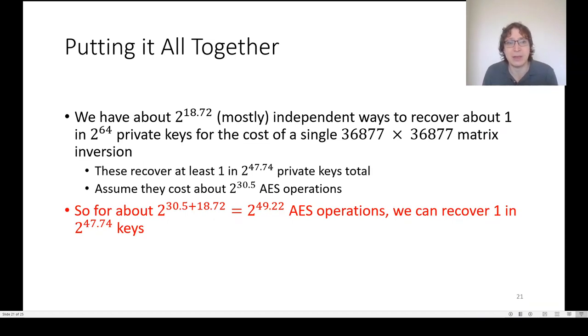When we put this all together, we have an attack that consists of 2 to the 18.72 iterations. Each iteration costs something like 2 to the 30 and a half AES operations, and we recover at least one in 2 to the 47.74 private keys. We find when we multiply those out, the net cost of the attack is 2 to the 49.2 AES operations, as promised.